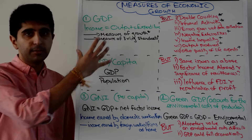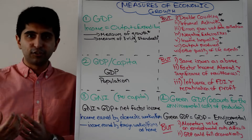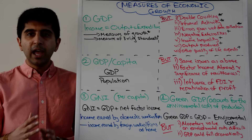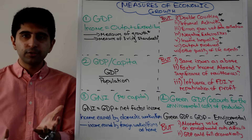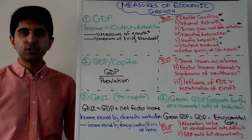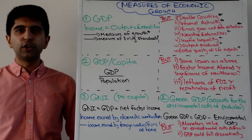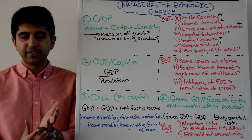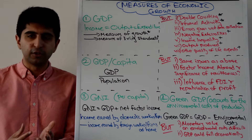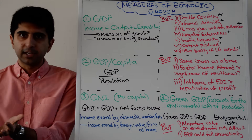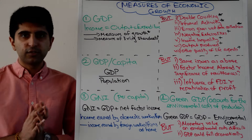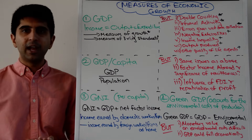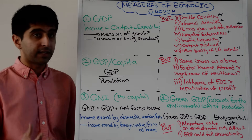Income inequality: nothing is mentioned in GDP about the distribution of income at all. Also, the kind of output produced matters — if lots of output produced is capital goods, that's not going to benefit consumers directly. Capital goods being produced benefits businesses and firms. It takes a long time for that to be converted into consumer goods, so if there is a lot of capital machinery or capital output produced, that's not necessarily going to increase living standards straight away.